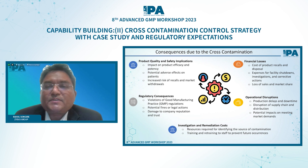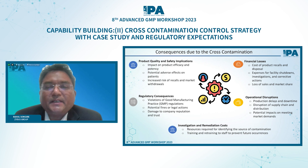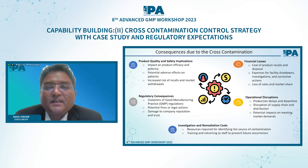What are the consequences of cross-contamination? Another way of looking at it is how we can increase the efficiency or reliability in our operations. The consequences include: first, impact on quality and safety implications, varying product efficacy, and jeopardized patient safety. Then financial losses — cost of product recalls and disposal, expenses for facility shutdowns, investigation, CAPA, loss of sales and market share. Regulatory consequences were spoken about in detail in the last session.